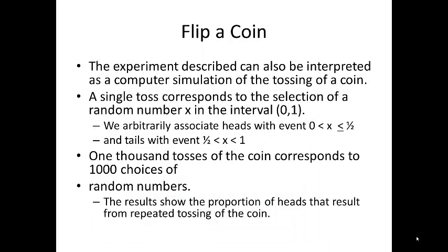The experimental distribution described on the last slide can be interpreted as a computer simulation of tossing a coin. A single toss corresponds to the selection of a random number x in the interval 0, 1. We arbitrarily associate heads with the event 0 is less than x is less than 1 half and tails with x lying between 1 half and 1.